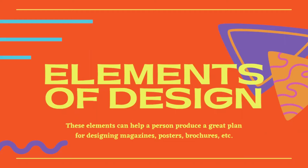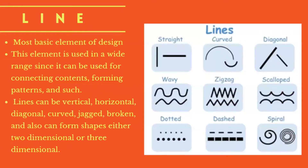First off, what are the uses of these elements? These elements can help us develop a great design in case we need to do magazines, brochures, posters, etc. for our school activities and many more. There are seven known elements in graphic design. The first one is the line, the most basic element commonly used by designers and students. Lines are used to connect and form patterns like shapes, and have different kinds of forms such as horizontal, vertical, diagonal, curved, jagged, broken, spiral, and many more.